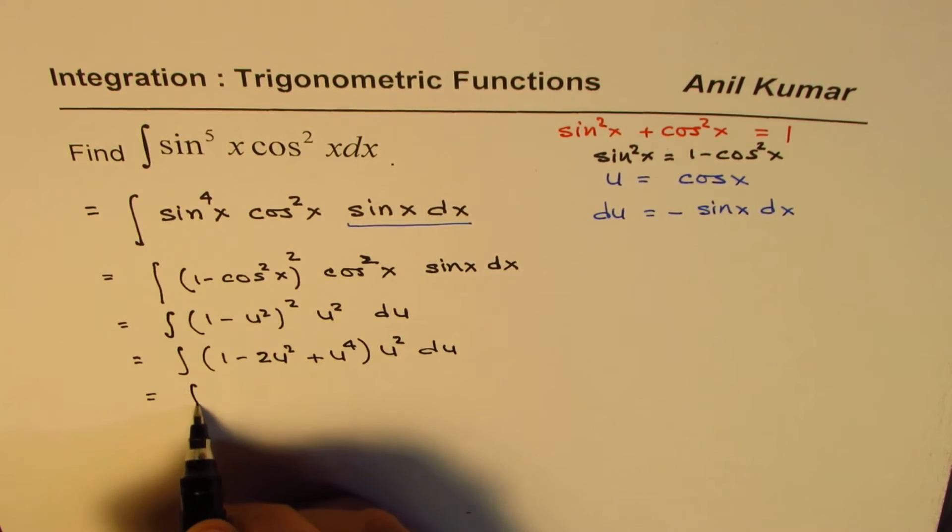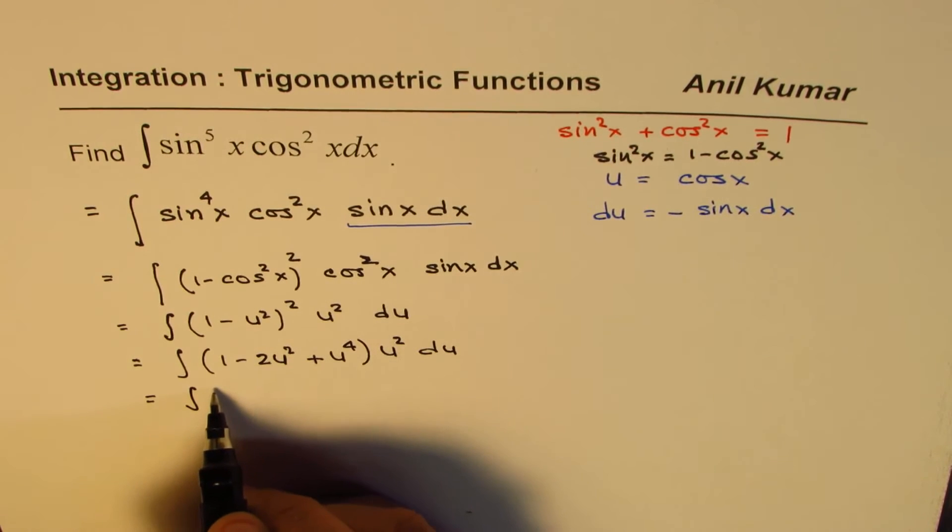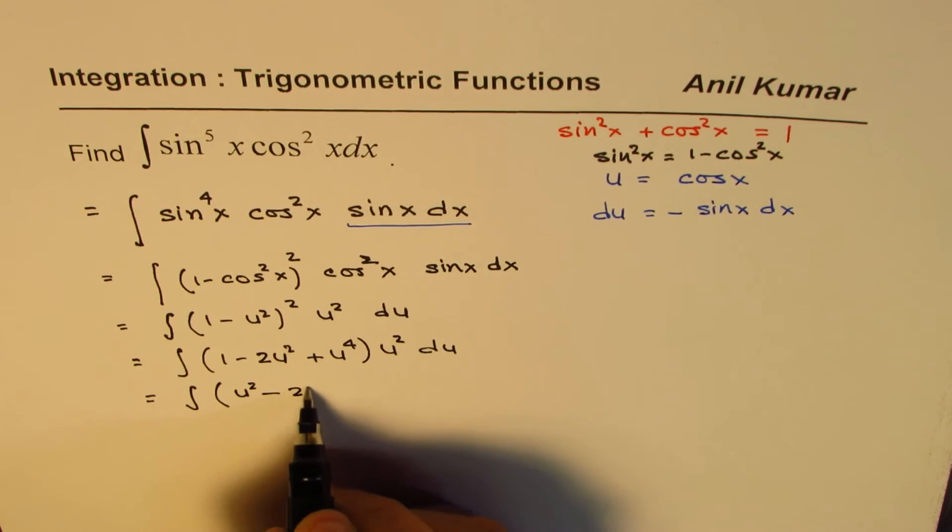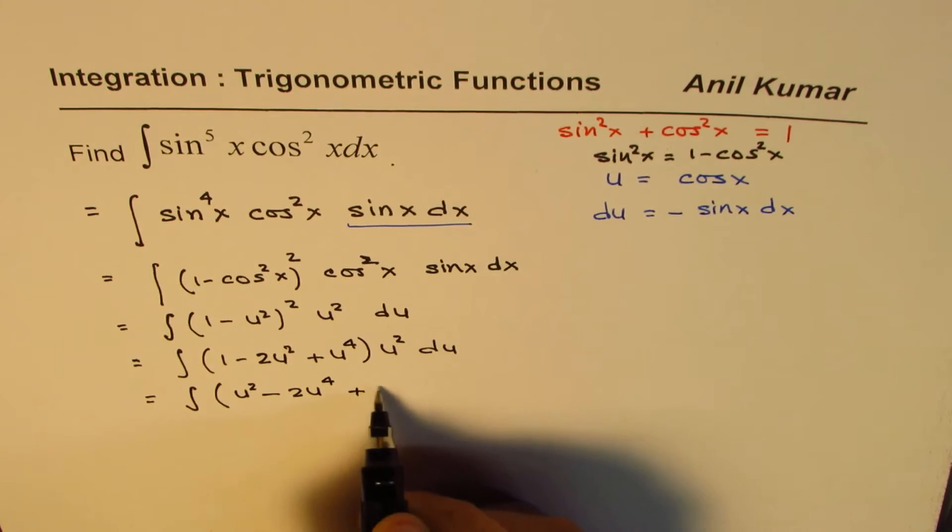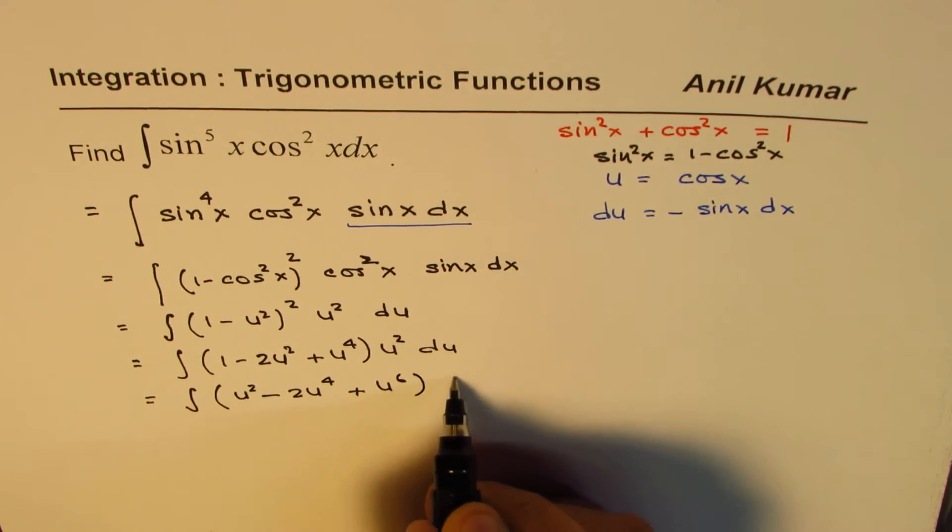And that is equals to, open the bracket, so we have u square minus 2u to the power of 4 plus u to the power of 6 du.